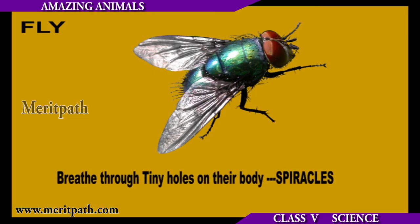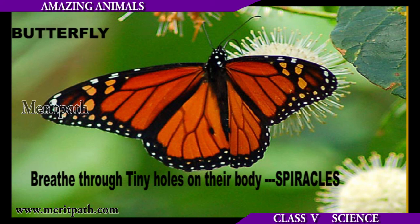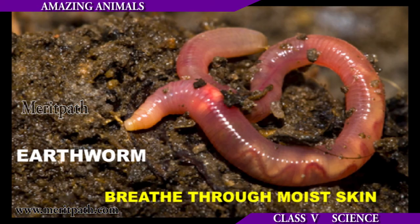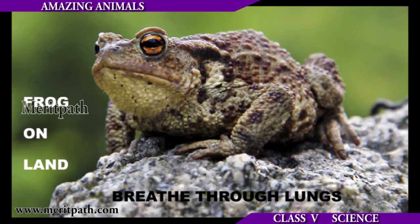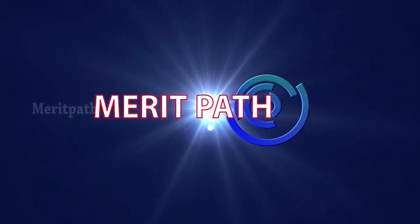Insects like flies, mosquitoes, and butterflies breathe through holes present in their body which are called spiracles. Animals like earthworms take in oxygen present in air trapped between the soil through their moist body surface. A frog is adapted to both types of breathing as it lives both on land and in water.